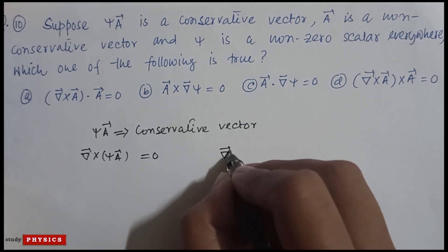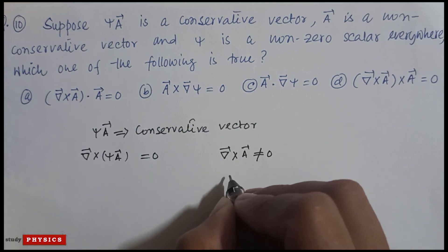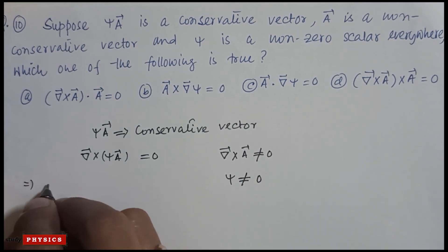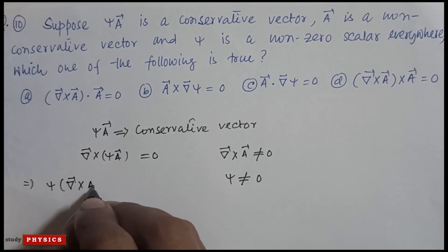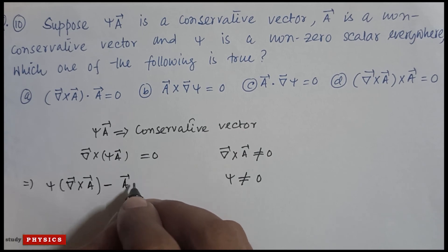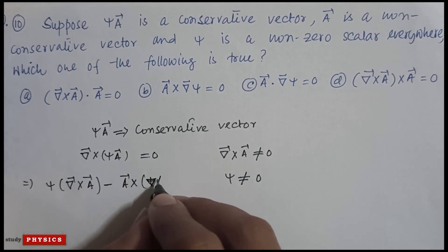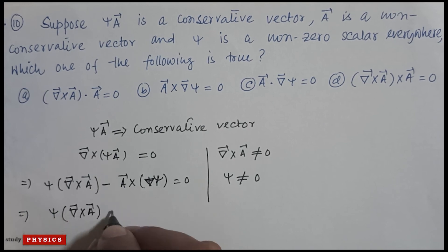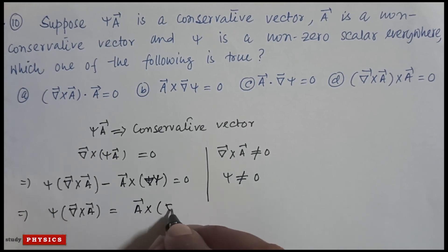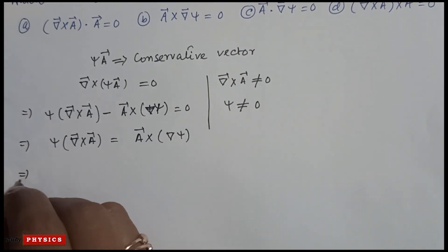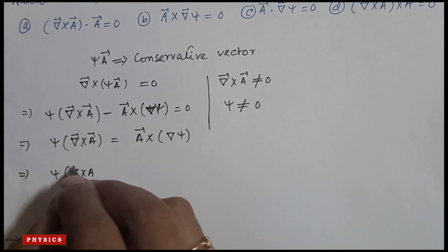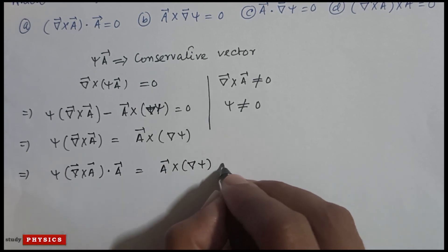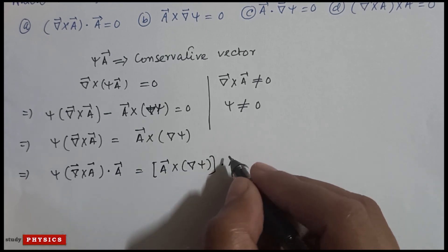They state that A is non-conservative, meaning curl(A) ≠ 0, and ψ is a non-zero scalar. Expanding curl(ψA) = 0 gives: ψ curl(A) − A × grad(ψ) = 0, so ψ curl(A) = A × grad(ψ). Taking the dot product with A: ψ [curl(A) · A] = (A × grad(ψ)) · A = 0.